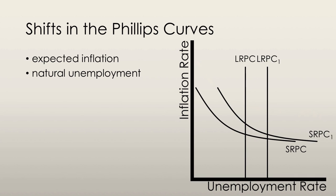A change in the natural unemployment rate will shift both the long-run and short-run Phillips Curves. An increase in the natural unemployment rate will shift both curves outward, and a decrease in the natural unemployment rate will shift both curves to the left. In both cases, the expected inflation rate does not change, and thus there is no vertical movement of the short-run Phillips Curve.